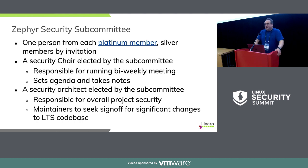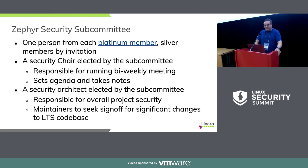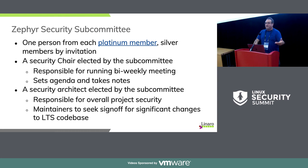The security subcommittee is defined by the Zephyr project charter. Zephyr is a project that companies join, with different levels of contribution. Each platinum member gets a seat, and others can be invited. There are two roles: the security chair, elected by the subcommittee and responsible for running meetings and making sure things happen; and the security architect — that's me — responsible for overall project security. Significant changes that affect security are supposed to go through the security architect before being made.